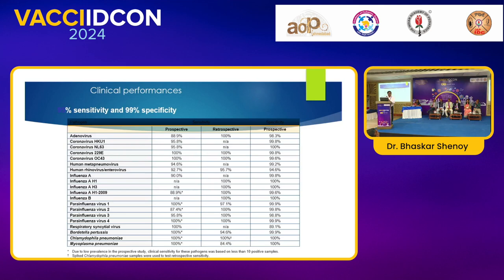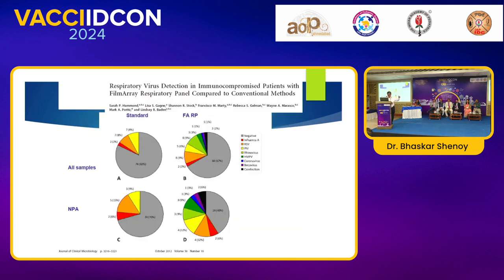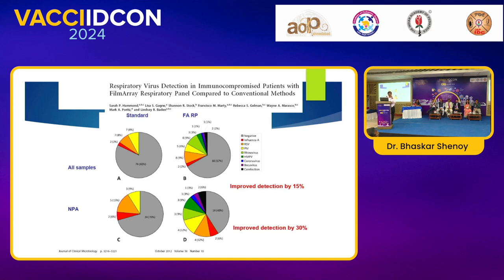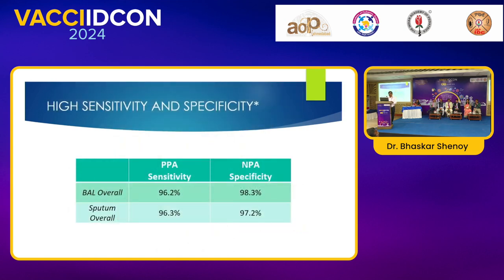These are the panels — clinical performance shows sensitivities around 98% and specificity around 99% for all organisms. A paper comparing the FilmArray respiratory panel to conventional methods showed it improved detection by 15%, and for nasopharyngeal aspirate by 30%. Detection rate is more important, and if it is a lower respiratory tract specimen like BAL, specificity and sensitivity increases.